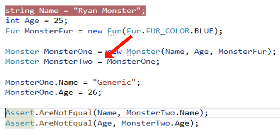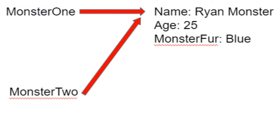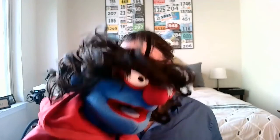Now since I made a copy, I should be able to change the name and the age and it shouldn't affect the second object. So I'm going to change monster one's name to Generic, and look what happens — Generic is changed on monster one and on monster two. Same thing with the age. What happened?